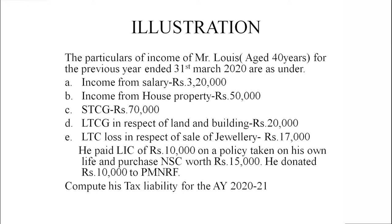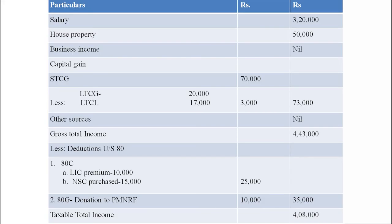We have to compute the tax liability for assessment year 2020-21. As discussed in the different steps, we first compute the different heads of income, allow exemptions or deductions, allow relief, and then deductions. Salary income taxable: 3,20,000. House property: 50,000. Business income: nil.